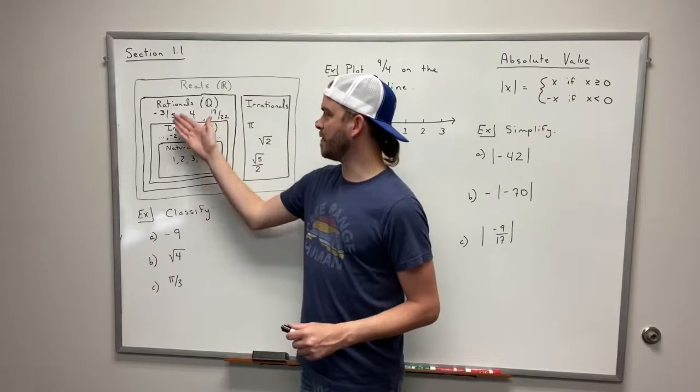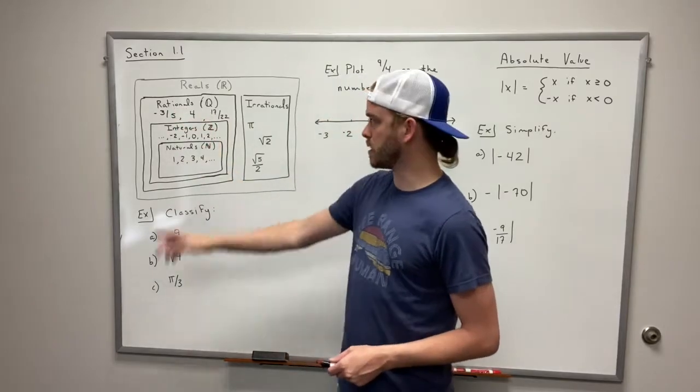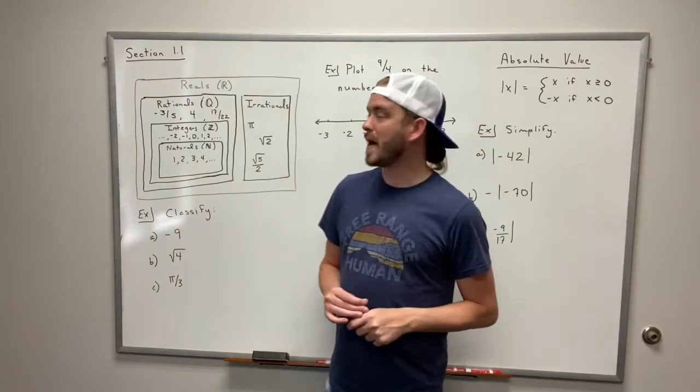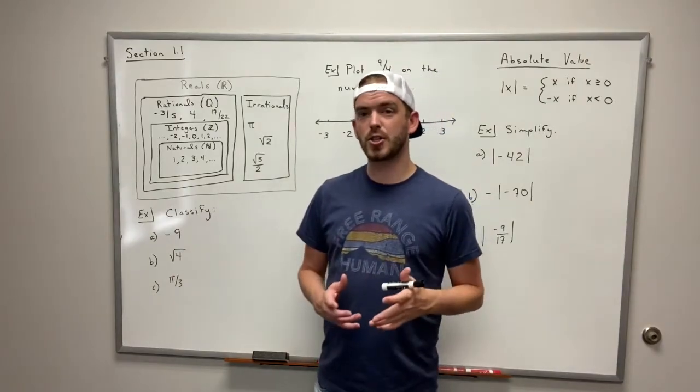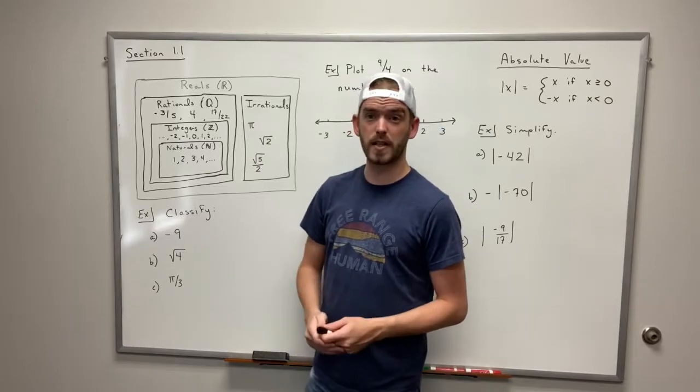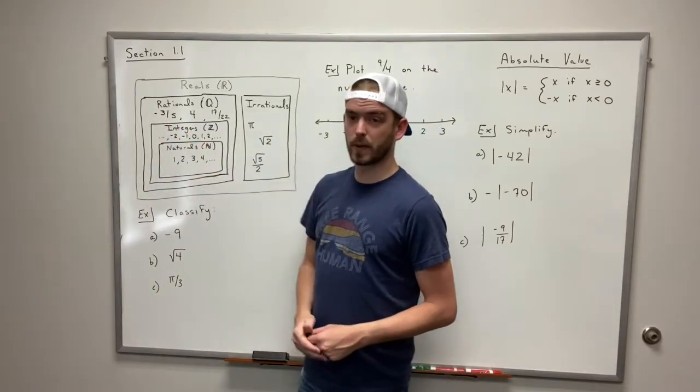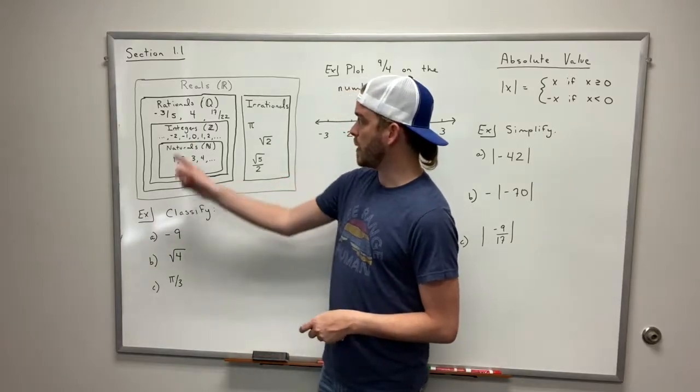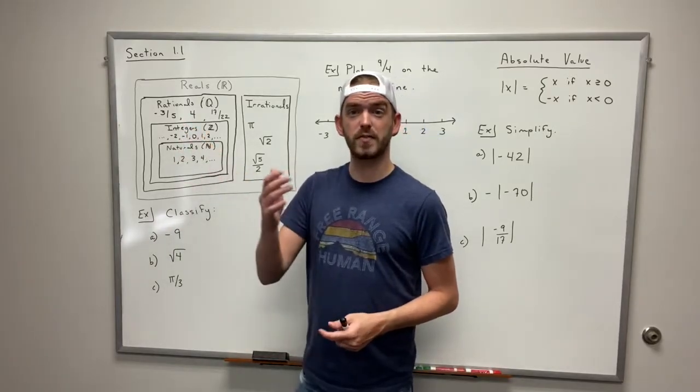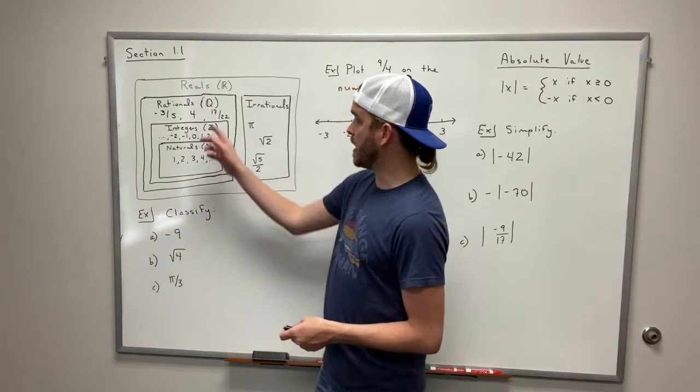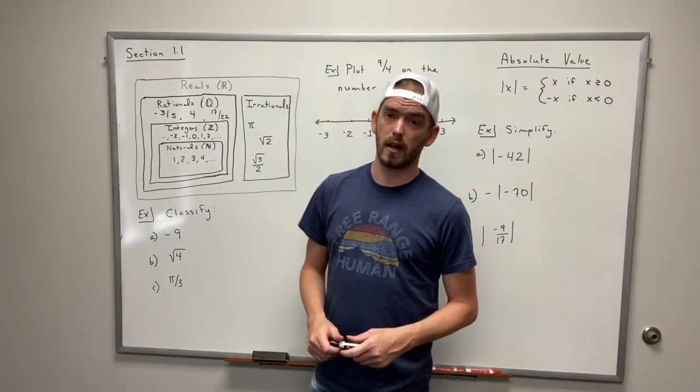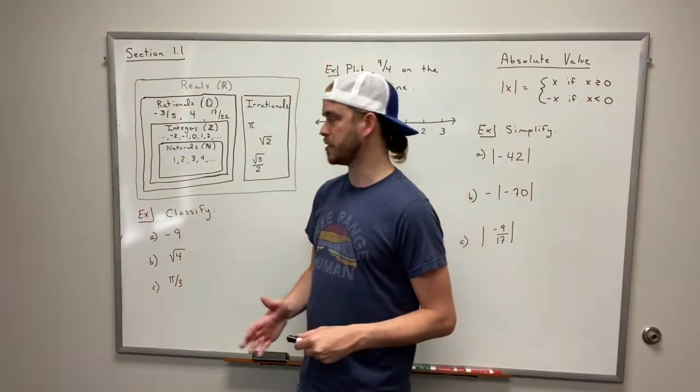Above that we have what we call our rational numbers. Those are represented by the bold face Q. Your rational numbers are any number that can be represented as the ratio of two integers. So if you look at our examples up here we have negative three fifths. That's negative 3 over 5 which are both integers. We have 4 which can be represented as 4 over 1 and we also have 17 over 22. So those are all represented as a ratio of two integers or a fraction of two integers.